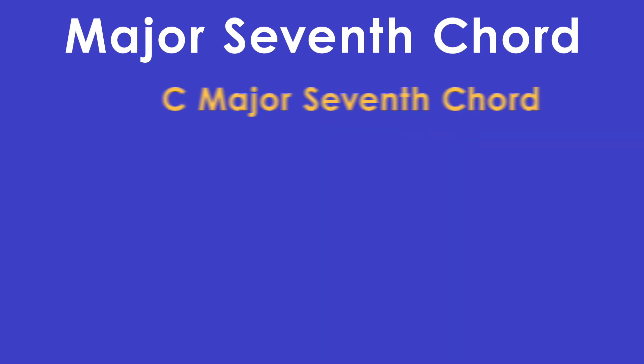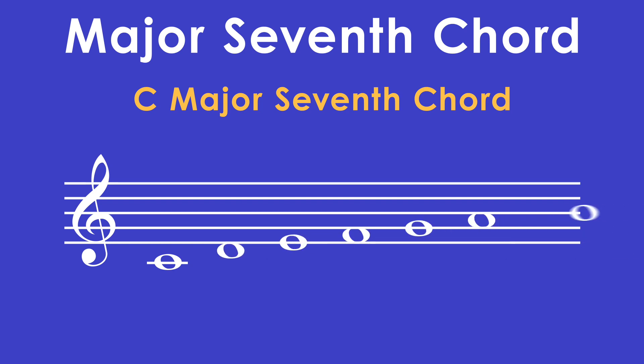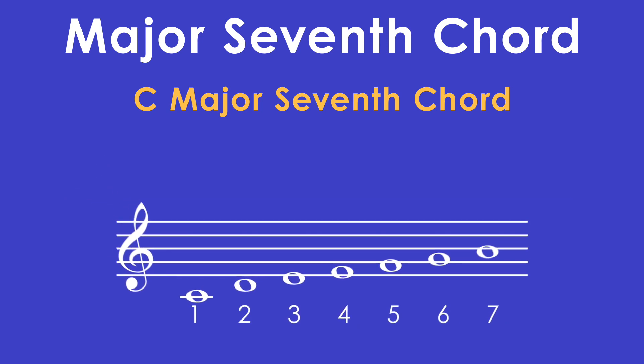Let's say we want a C major seventh chord. C is going to be our root note — we know that from the name. The root is always the letter in the name of the chord. This will also determine our key signature. The key signature for C major is no sharps or flats, so we're good to go. The next step is to fill out the C major scale, going from C to C on the staff, and numbering our scale degrees from one to seven. Now we can find our chord notes.